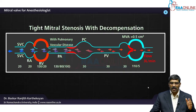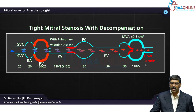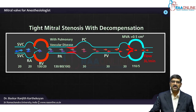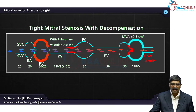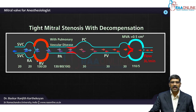When mitral stenosis decompensates and the heart decompensates, the cardiac output is almost decreased by 50%. The valve orifice is almost 0.5. The LA pressure has increased to 30, which is reflected back on the pulmonary venous system, and pulmonary vascular disease has now occurred. This red color represents the pulmonary vascular resistance. The pulmonary vascular resistance is going to be high, the right ventricle is bound to fail, and the right ventricular pressure becomes markedly elevated.